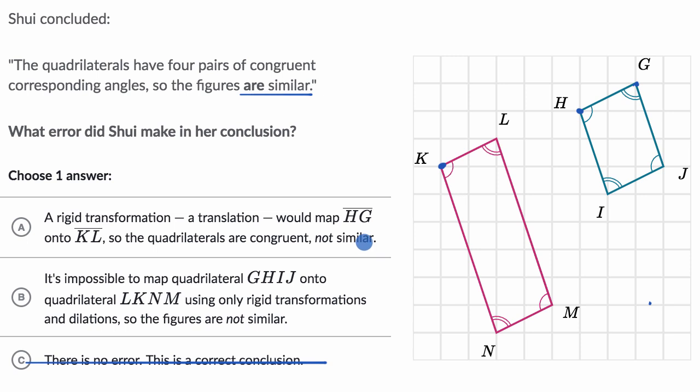Oh, choice A is making an even stronger statement. Because anything that is congruent is going to be similar. You actually can't have something that's congruent and not similar. And so choice A does not make any sense.